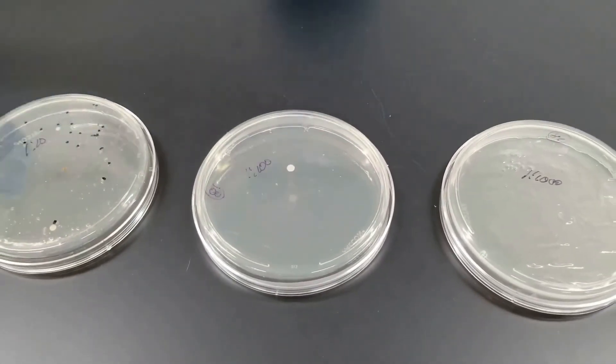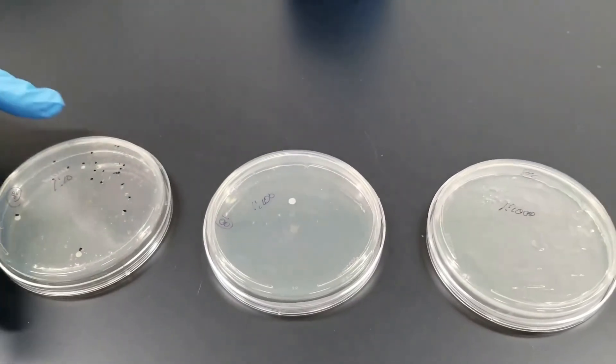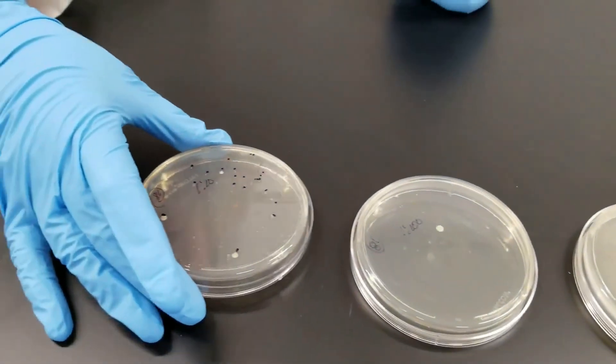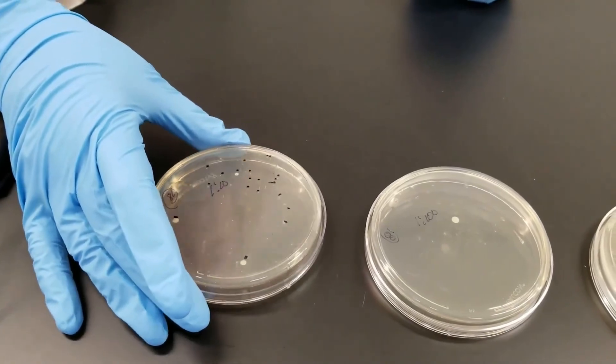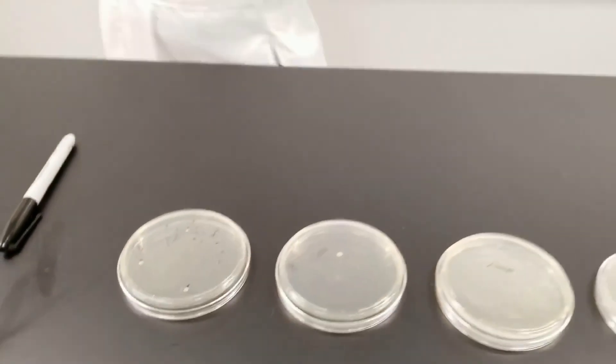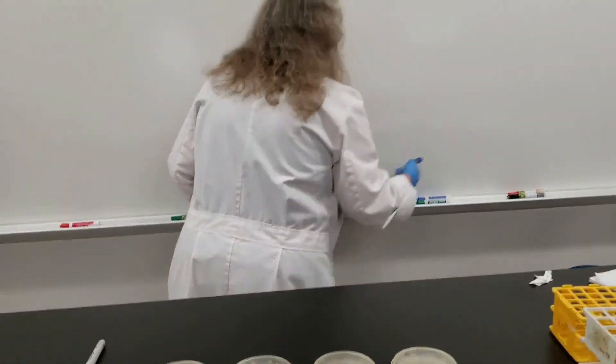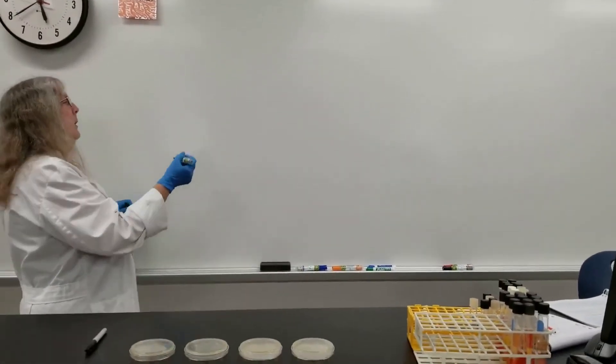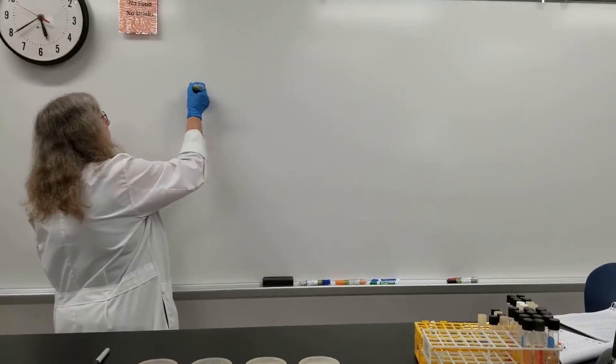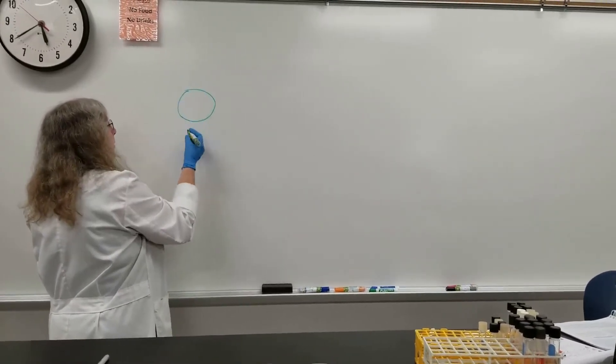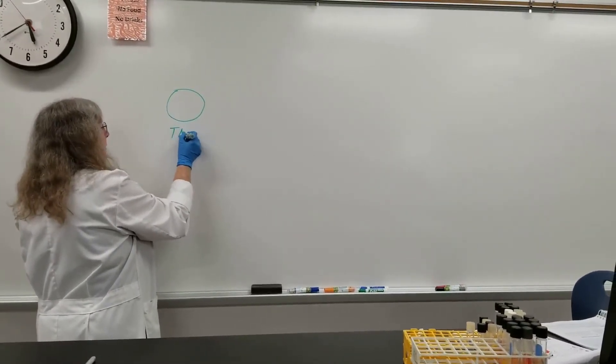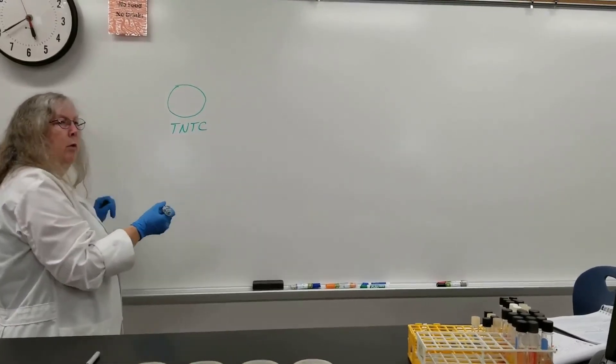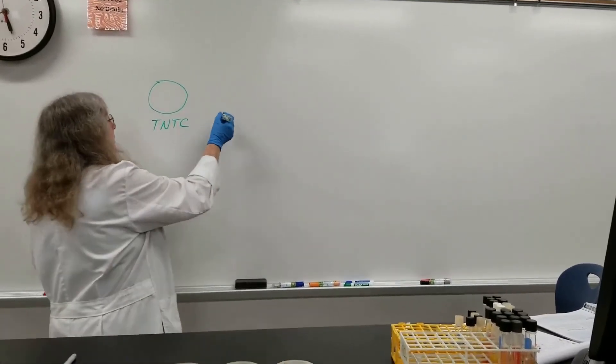Now what do you do with this number? We have previously counted this plate, the 1 to 10, and what you would do is oftentimes your first plate here may be too numerous to count, TNTC. That means there's more than 300 colonies on there.